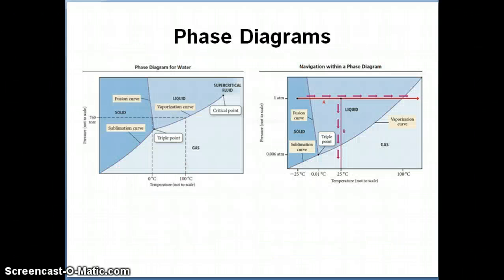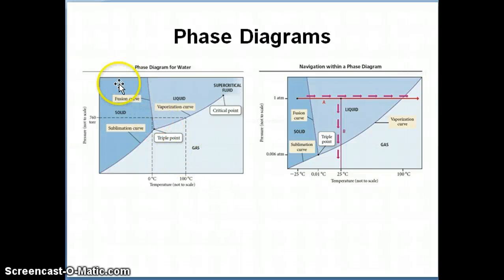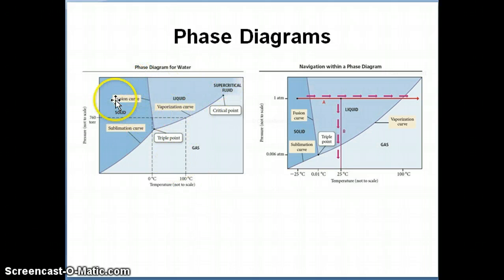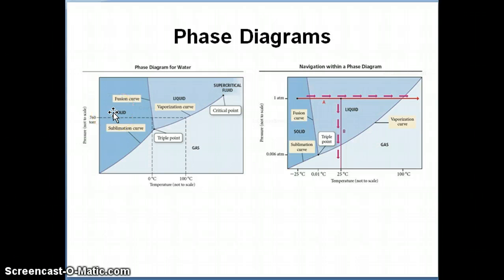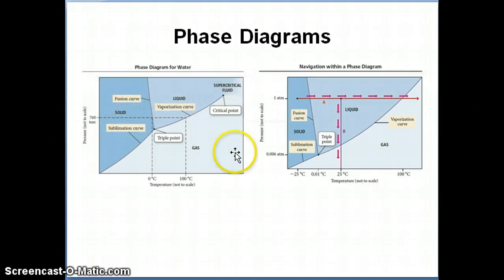The last component of this topic is phase diagrams, which represent how a pure substance changes between solid, liquid, and gas states as a function of pressure and temperature. The y-axis is pressure and the x-axis is temperature. For water's phase diagram, the solid region is on the upper left — low temperature and high pressure favor the solid state — the gas region is lower right at high temperature and low pressure, and the liquid occupies the middle region.